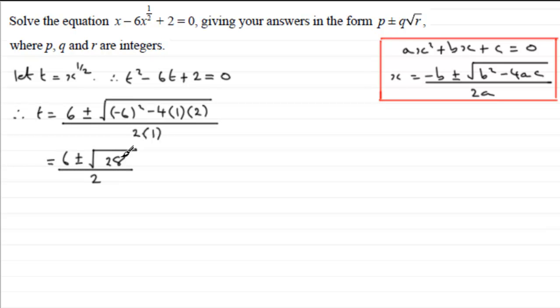Now I can pick up on the root of 28 because that contains a square factor number 4. So therefore what we've got here is 4 multiplied by 7, all divided by 2. And I can then say that this is exactly the same as 6 plus or minus the square root of 4 multiplied by the square root of 7.